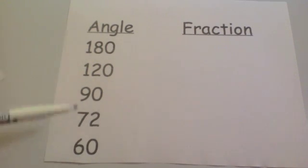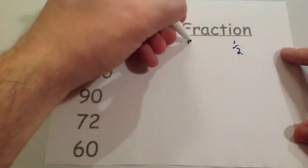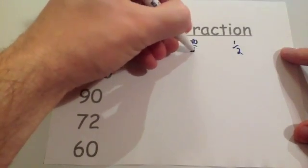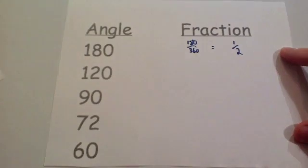So, here I've written down the size of the angles and we're going to work out the fractions they represent. Now, 180, we know that, first of all, straight away, 180 is half of a pie chart. That's because if you wrote 180 over 360 and you simplify that down, you would get one half.